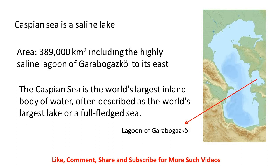The Caspian Sea is a saline lake and its area is 389,000 kilometers square, including the highly saline lagoon of Karbogaz to its east. As shown in the figure, you can see the lagoon of Karbogaz to the east of the Caspian Sea. The Caspian Sea is the world's largest inland body of water — it is so big that it is often described as the world's largest lake or a full-fledged sea, which is why it is called the Caspian Sea. It is a saline lake, not a freshwater lake.